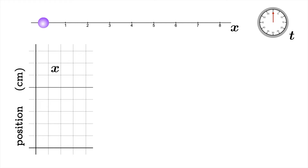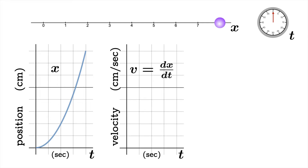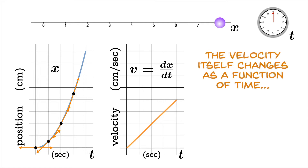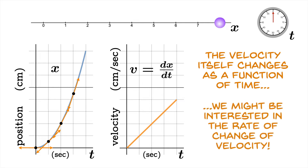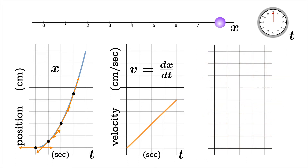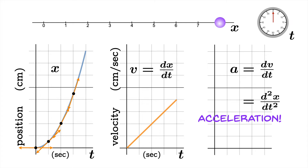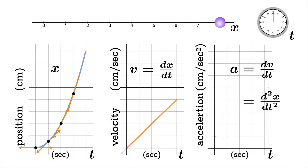Let's take a look at a specific example. Suppose we have a particle moving to the right and it seems to be speeding up, with a position function that looks like this. The velocity is the rate of change of the position function — we can look at tangent slopes and plot those values. In this case the velocity is changing as well, so the velocity itself changes as a function of time. We might be interested in the rate of change of velocity, which brings us to the definition of acceleration. Acceleration is the rate of change of velocity with respect to time — the second derivative of position with respect to time. In our example, the slope of the velocity function is constant and equal to 1, so our acceleration is constant at 1. The units would be centimeters per second per second, or centimeters per second squared.